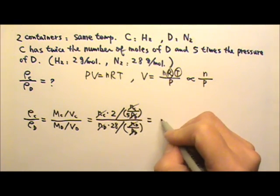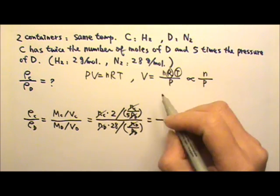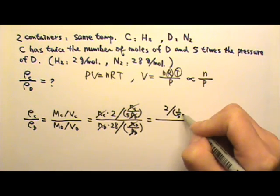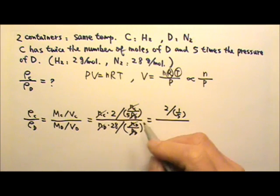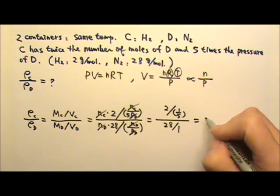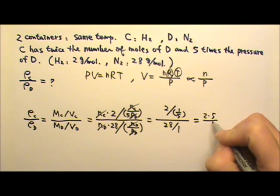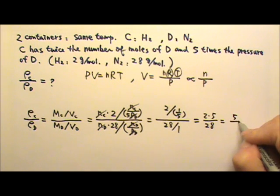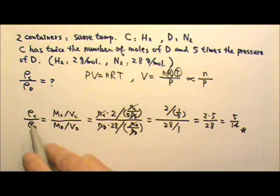Simplifying, we have 2 divided by 1/5 in the numerator, and 28 divided by 1 in the denominator. This gives 2 times 5 divided by 28, which is 5 divided by 14. So 5/14 is the ratio of the densities.